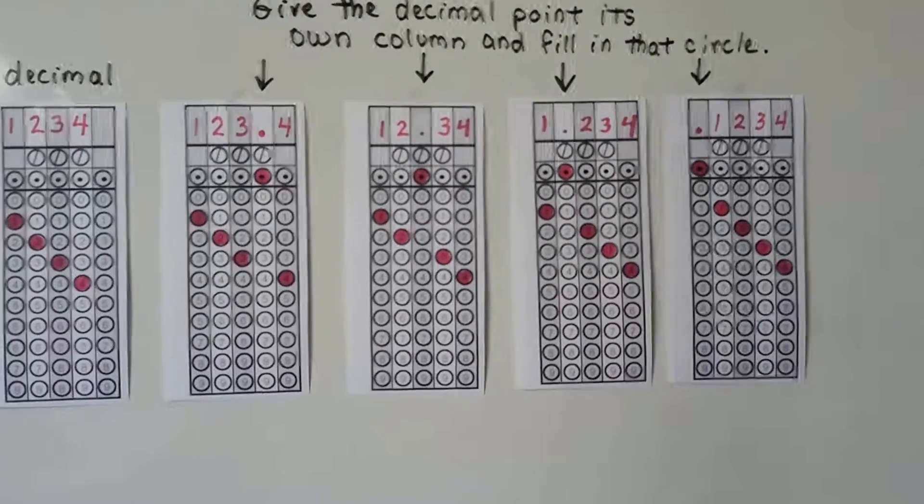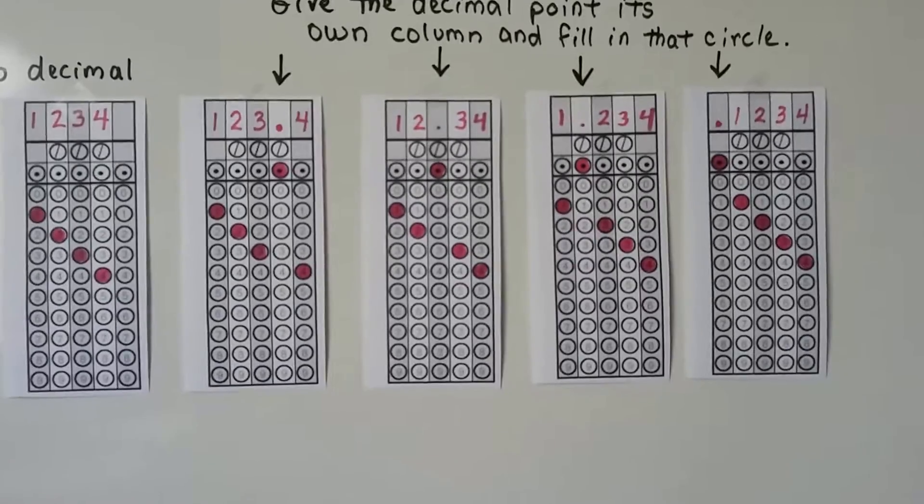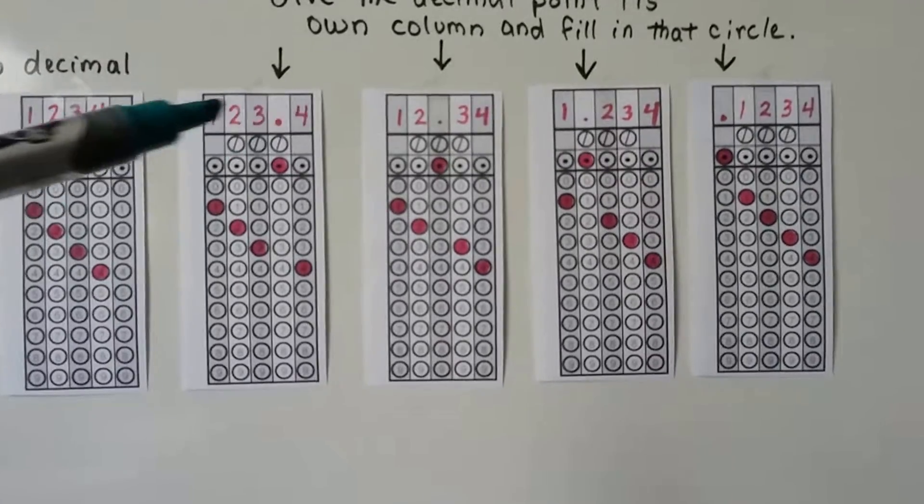For every single answer, no matter where the decimal is, it has to have its own column. That's why writing it in up here can help you.